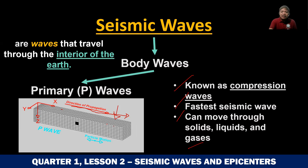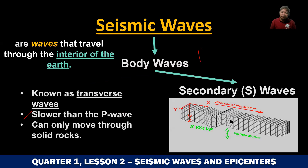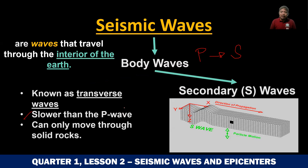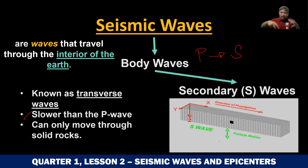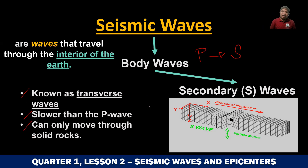The next type of body wave is known as the secondary wave or the S wave. Bakit siya tinawag na secondary wave? Because it is slower than the P wave — yung unang dumarating is the P wave, and then ang susunod na darating is the S wave. It is called a transverse wave because they move up and down like a coil or a spring. And here is the catch: they can only move through solid rocks — they cannot move through liquid rocks or even gases.